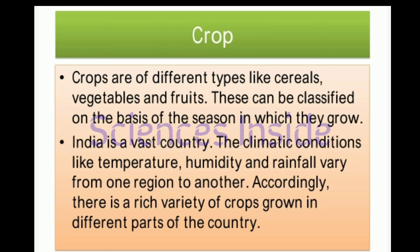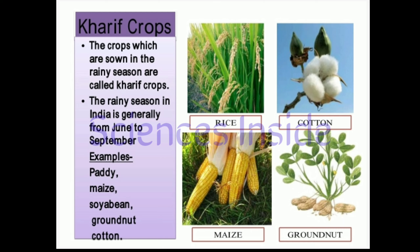Crops can be classified on the basis of the season in which they grow. India is a vast country and climatic conditions like temperature, humidity, and rainfall vary from one region to another. Accordingly, there is a rich variety of crops grown in different parts of the country, and based on the season, crops are of the following types.